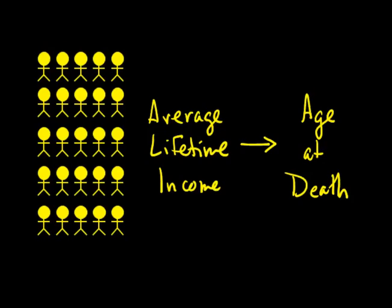For average lifetime income, we might think of it as high income versus low income. We think about everyone in the population under a condition of high income and what their average age at death would be, and then everyone under low average income and what their age at death would be. If we think the age at death would be different, we can hypothesize that average lifetime income is a cause of differences in age at death in the population.